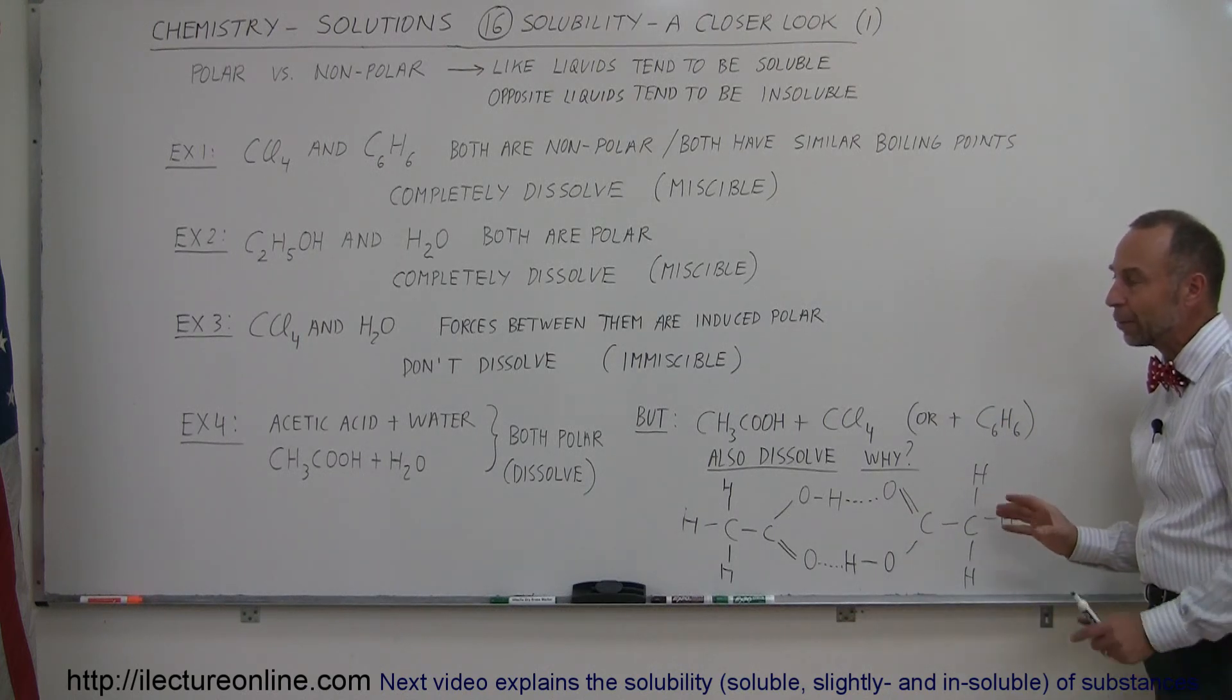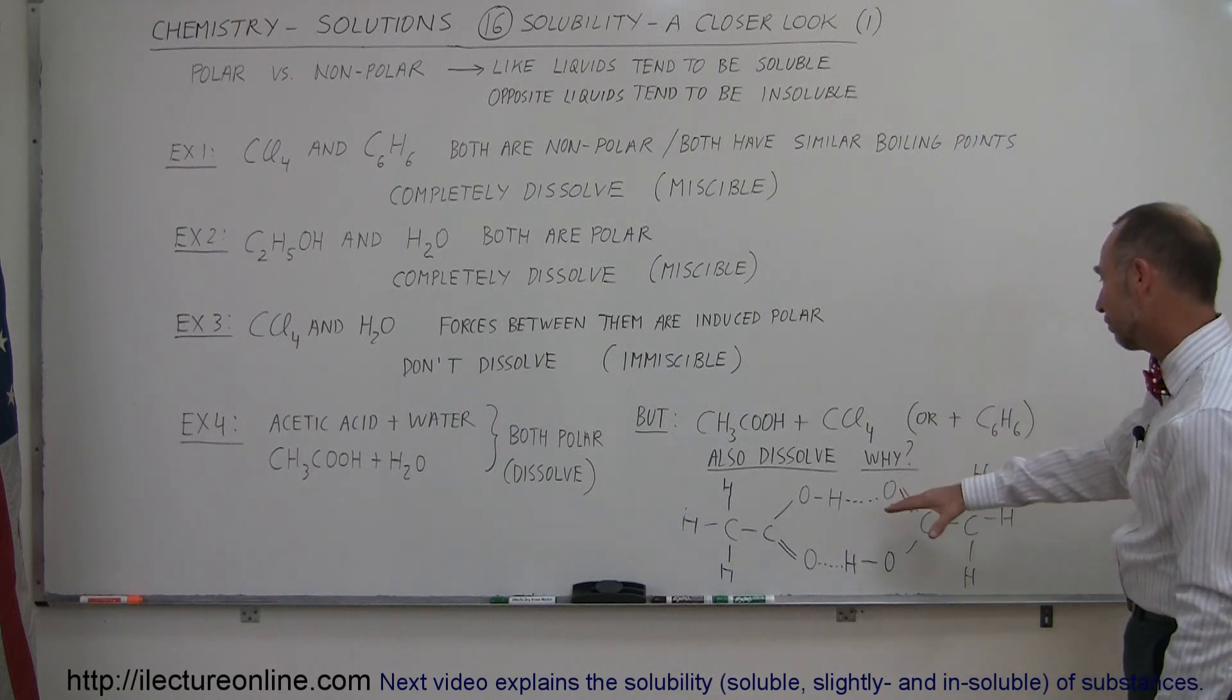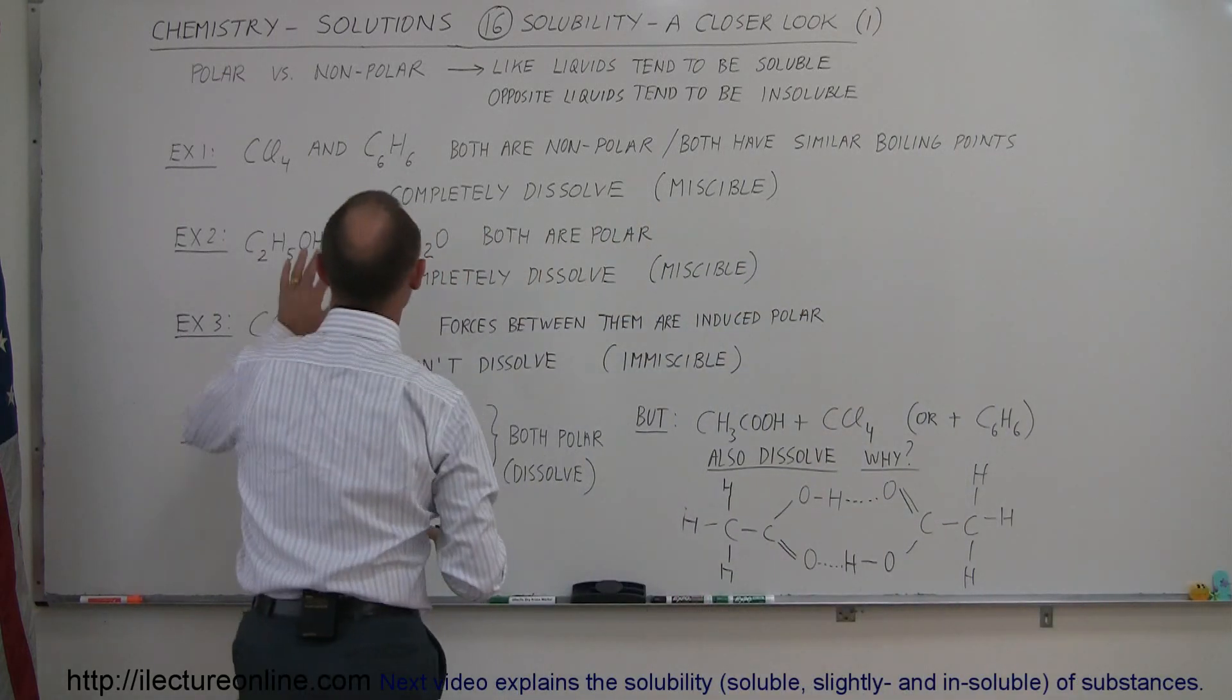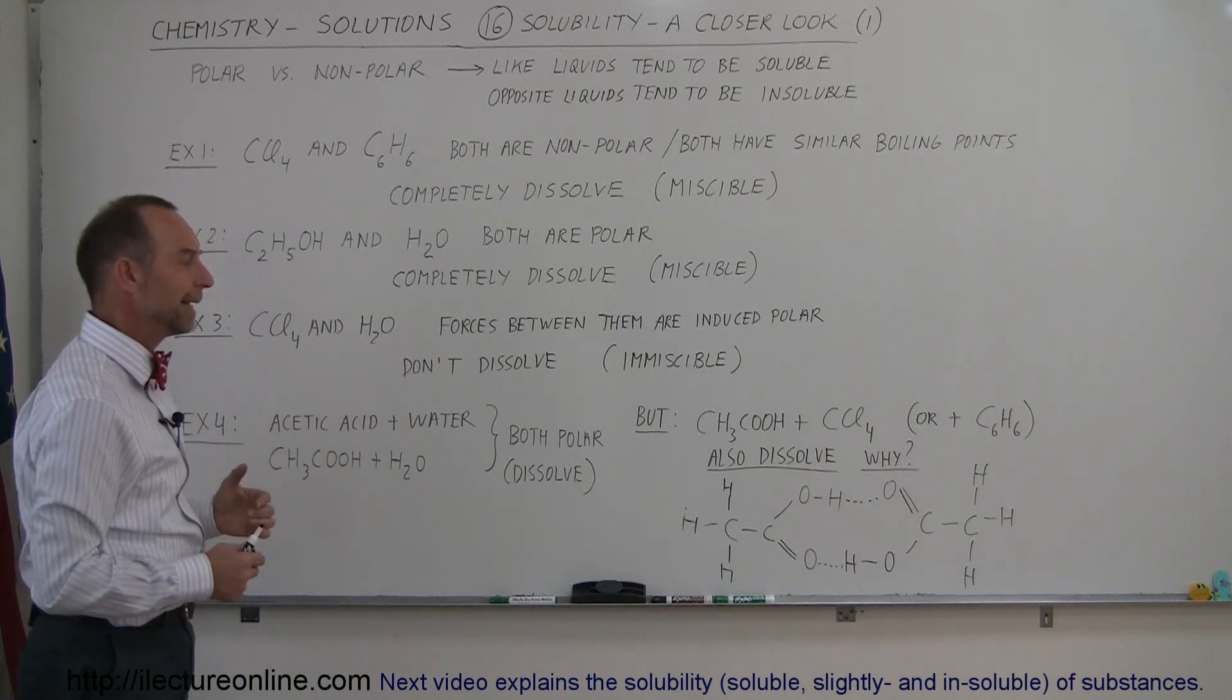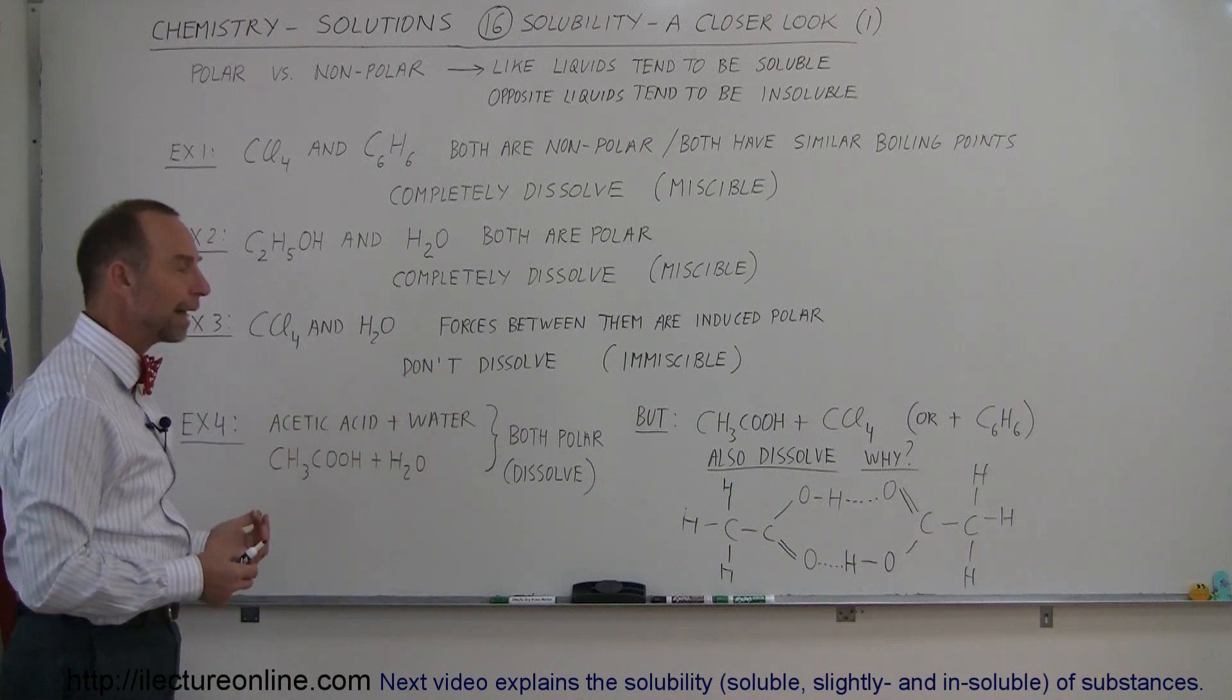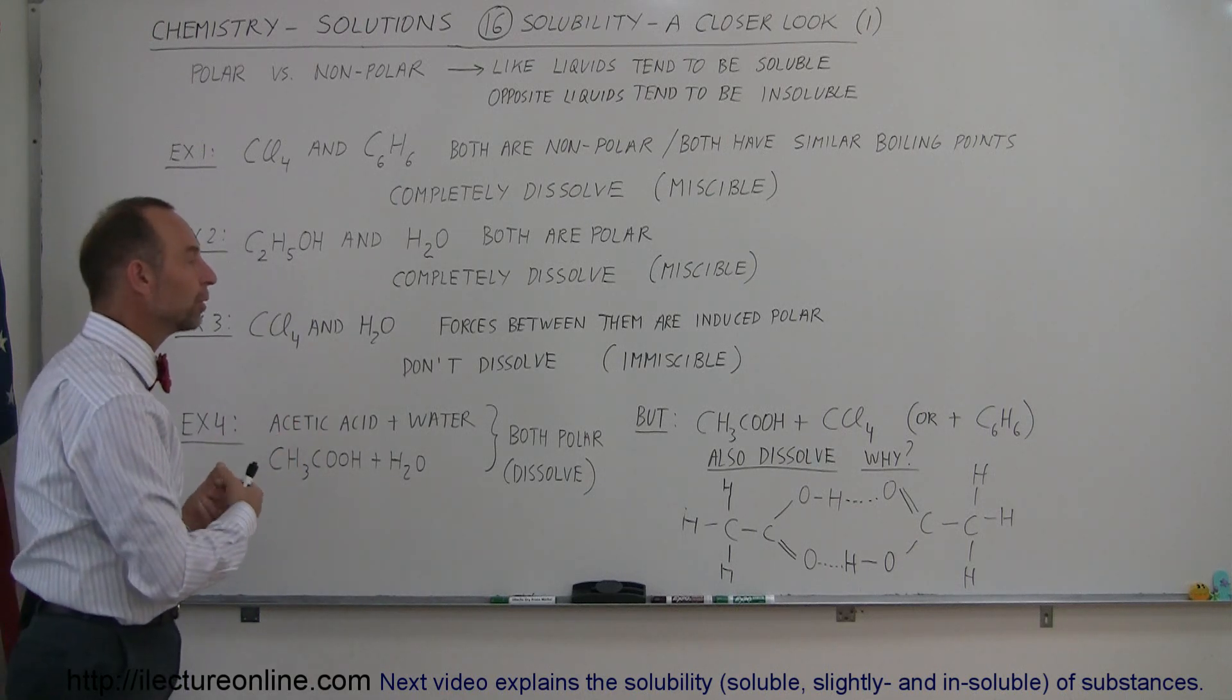So there you have an example where, because of some unusual properties of acetic acid, a polar molecule can dissolve a non-polar molecule. And so you can see the general rules are there. Generally, we'd say if they're both polar or both non-polar, your chances are pretty good that they will dissolve one another. If one is polar and the other is non-polar, there's a chance it may happen, but very likely it will not. So those are the general rules to follow as you start looking at why some things will dissolve and why some things will not.